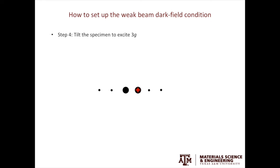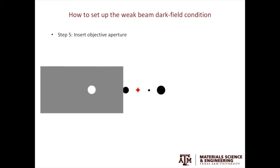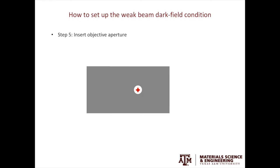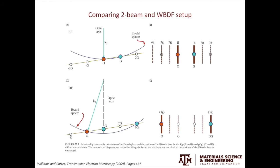Next, you further tilt the specimen to excite 3G. As you excite 3G, the 3G spot will become brighter and the 1G spot will become dimmer. Now it is the weak beam condition for 1G. Then you insert the objective aperture and exit the diffraction mode to view the image.